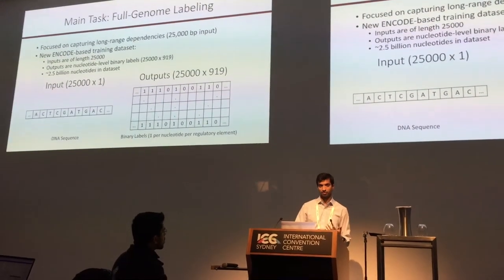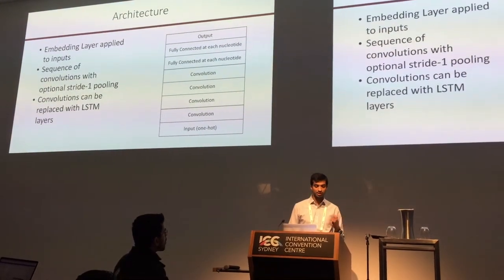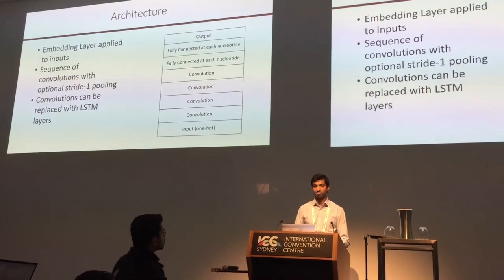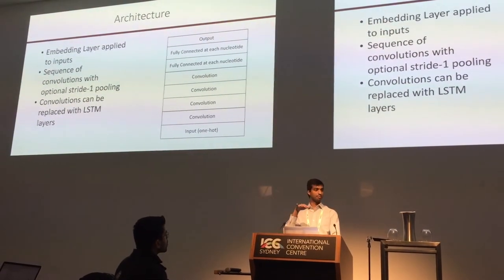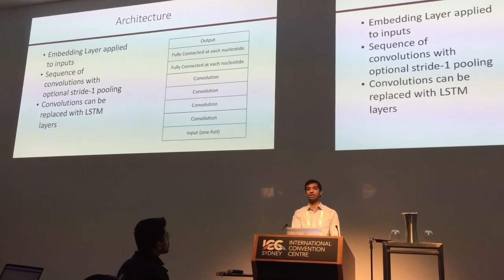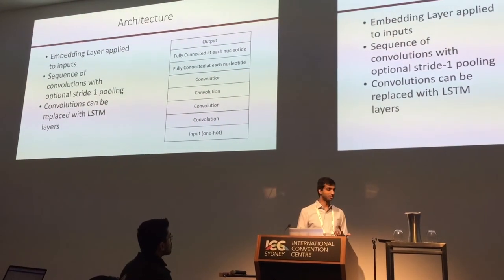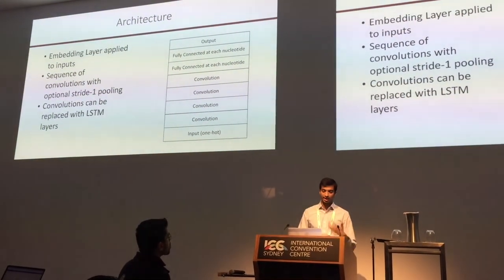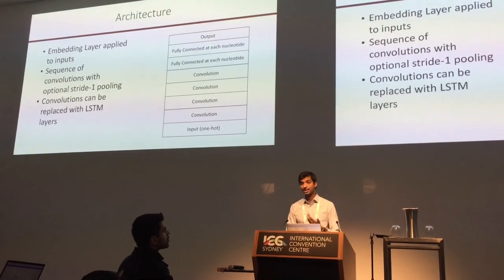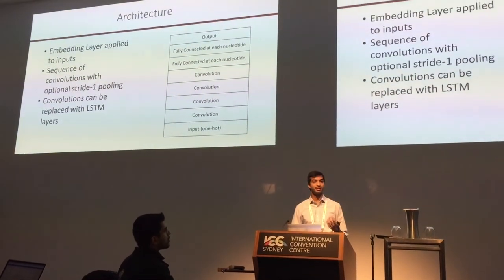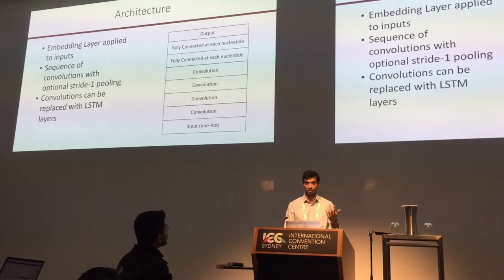The task is full genome labeling — binary classification at each nucleotide. The architecture starts with an input, embeds it into a higher-dimensional space, then has a series of convolutions followed by fully connected layers applied to each nucleotide individually — not across the full input — similar to a one-by-one convolution in computer vision. In this case every output only depends on a subset of the inputs. Since the outputs are 25,000 by 919, a true fully connected layer at the end would be prohibitively expensive with millions of parameters.